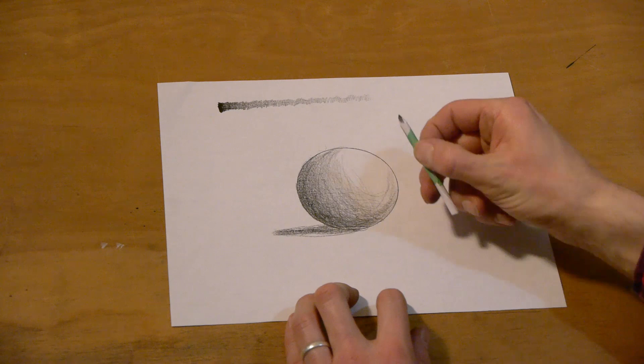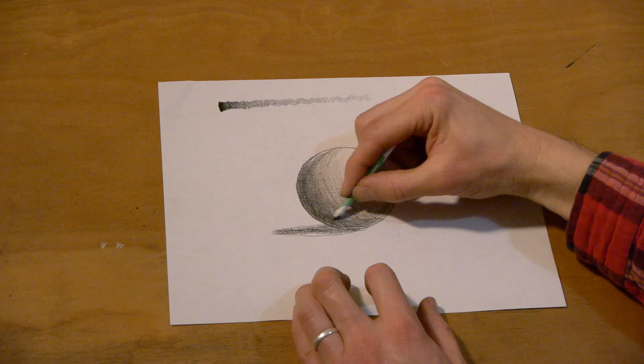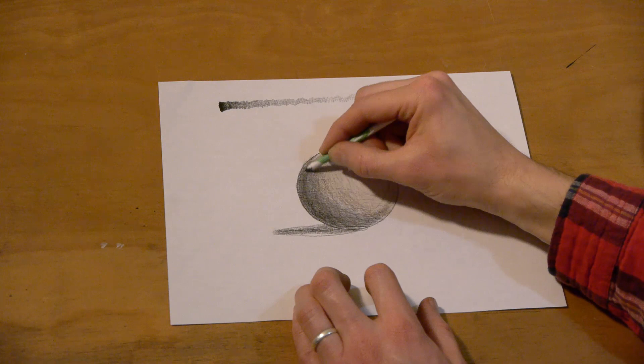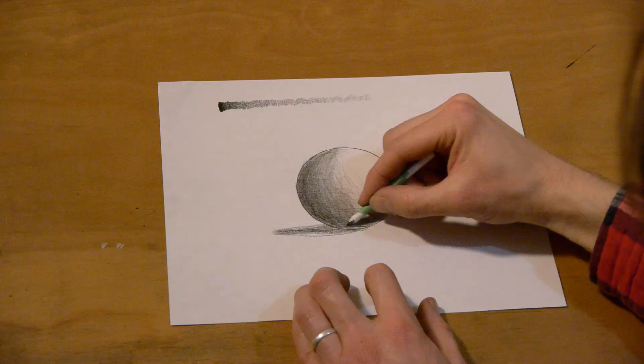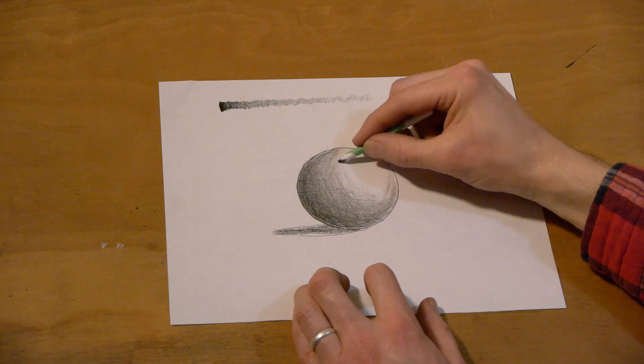So now I've got something else here. This is another tool and this is called a blending stub. This is what you can use to blend all those little hairy lines that you made with your pencil, blend them together to get more of a smooth, smooth gradation from darks to lights. You're just basically rubbing that graphite together and smoothing it all up.